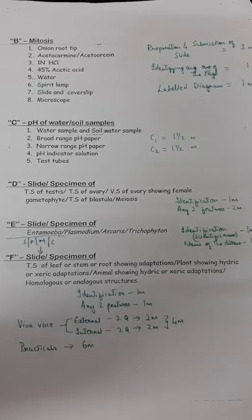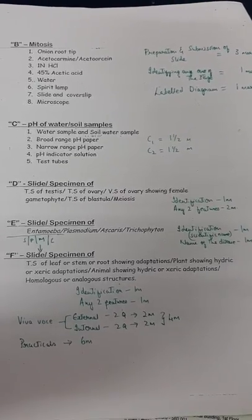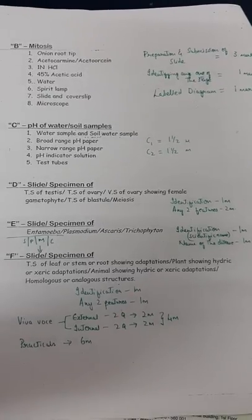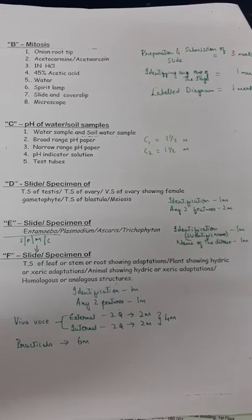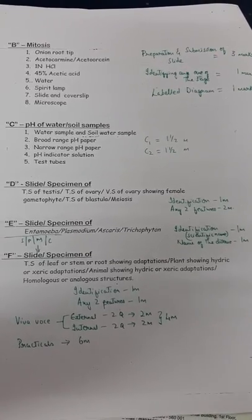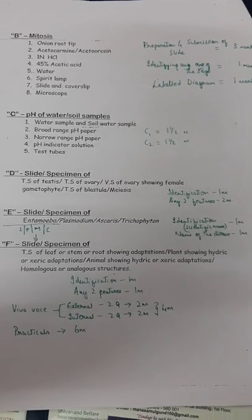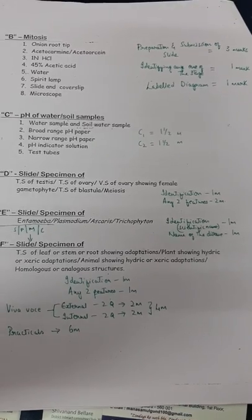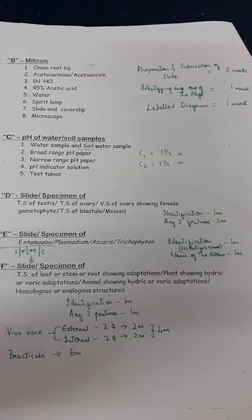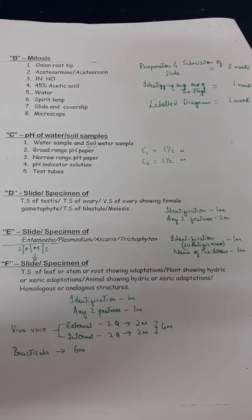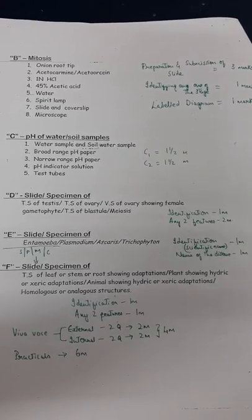Question E slide or specimen might be disease-causing organisms: Entamoeba which causes amoebiasis, Plasmodium vivax which causes malaria, Ascaris lumbricoides the roundworm, or Trichophyton. Correct identification of the given material gets one mark, and naming the disease caused by the organism gets one mark. It's a two-mark question and very easy.